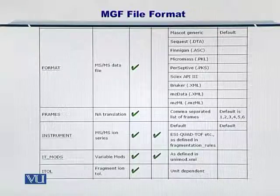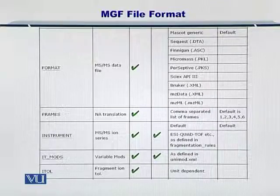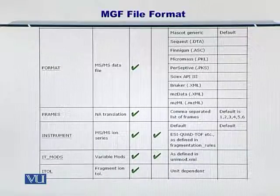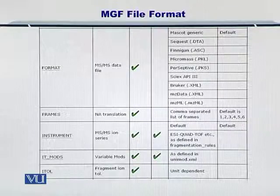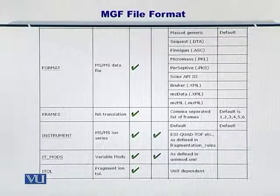Next, you have the frames and the instrument attributes, and you can specify each one of them yourself. There are also variable modifications that you can specify, and the fragment ion tolerance. All of these parameters you can set up in your MGF file that is output from the MatrixScience Mascot search engine.